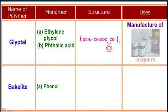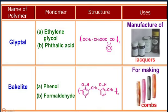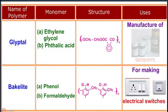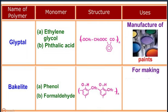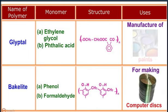Bakelite: the monomers are phenol and formaldehyde. It is used for the manufacture of combs, electrical switches, handles of utensils and computer discs.